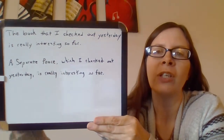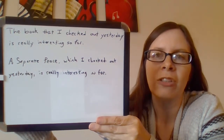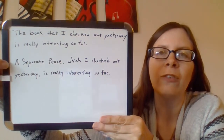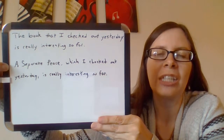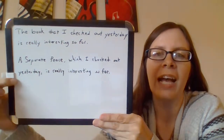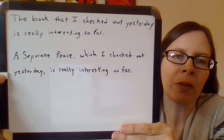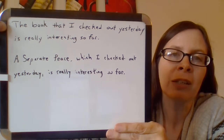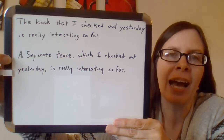Now if we look at the second example, it says: 'A Separate Piece, which I checked out yesterday, is really interesting so far.' Here we know the name of the book — A Separate Piece. So adding a little bit more about the book isn't necessary; it's just adding interest. That is why 'which I checked out yesterday' has commas around it. So: if you need the clause to know what you're talking about, there aren't any commas. If you don't need it, there are commas — it's just adding interest.